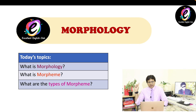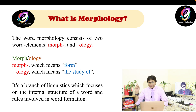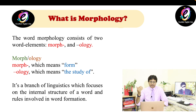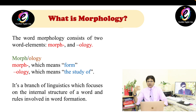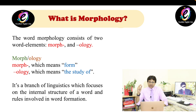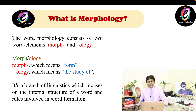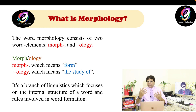What is morphology? The word morphology consists of two word segments: morph and ology. Morph means forms and ology means the study of — meaning the study of word formation. Morphology is a branch of linguistics which focuses on the internal structure of a word and rules involved in word formation, meaning how we make words.